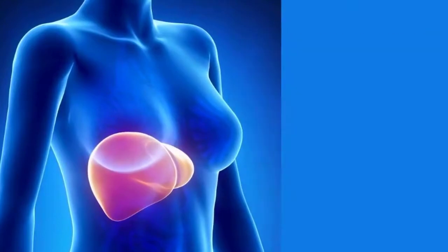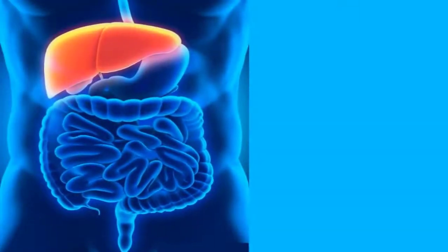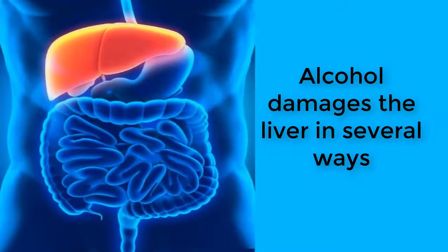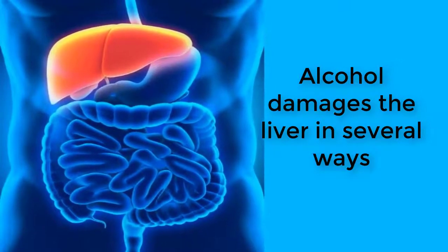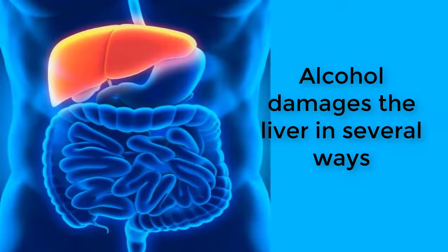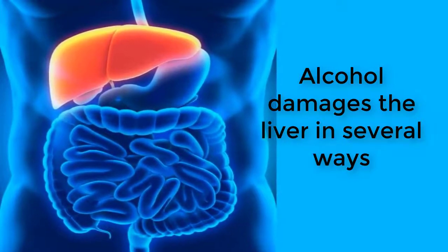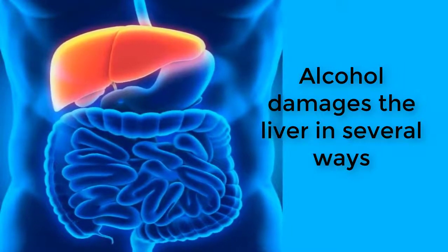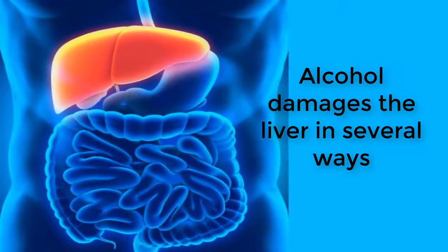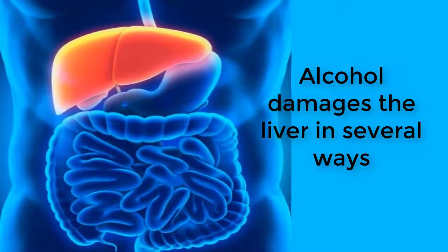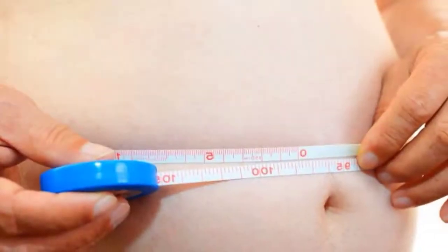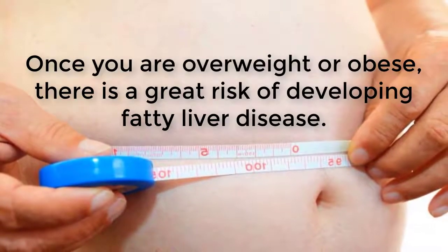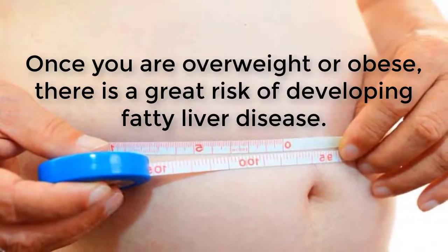Alcohol damages the liver in several ways. When you drink large amounts of alcohol, you begin to lose your appetite. Over time, you end up with vitamin and mineral deficiencies that contribute to the development of fatty liver disease. Studies show that deficiencies of vitamin D, vitamin E, vitamin A, methionine, choline, vitamin C, and other B vitamins may be related to fatty liver disease.